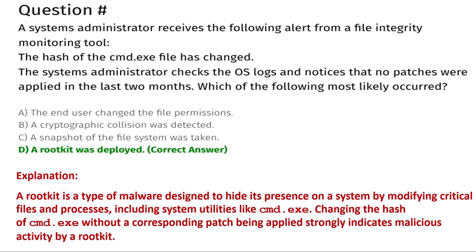The next question: a system administrator receives an alert from a file integrity monitoring tool stating that the hash of the cmd.exe file has changed. The system administrator checks the OS logs and notices that no patches were applied in the last two months. Which of the following most likely occurred? Option A: the end user changed the file permissions. Option B: a cryptographic collision was detected. Option C: a snapshot of the file system was taken. Option D: a rootkit was deployed.